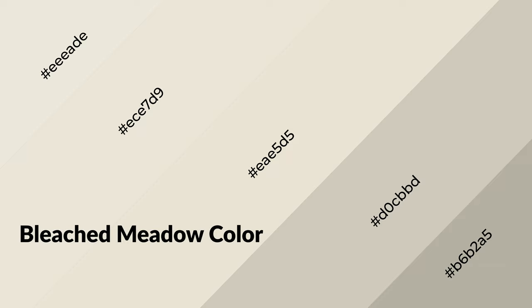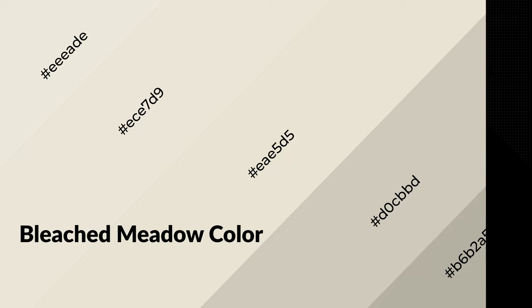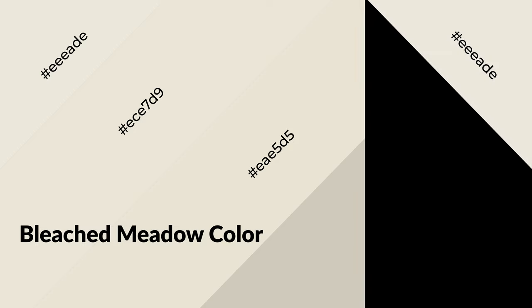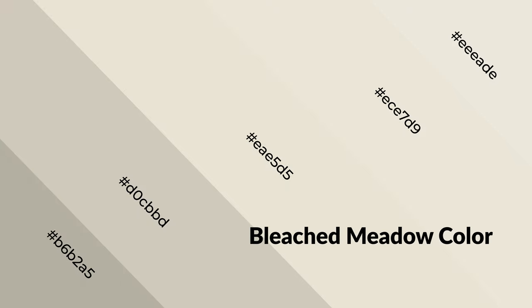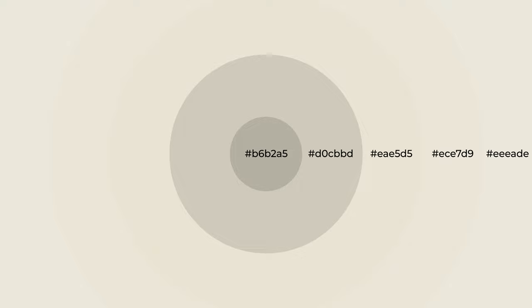Bleached meadow is a warm color and it emits cozier and active emotions. Warm colors are symbols of warmth, fire, heat, and sunshine. It also evokes joy, passion, love, and even anger. You can see them used in restaurants and gyms.